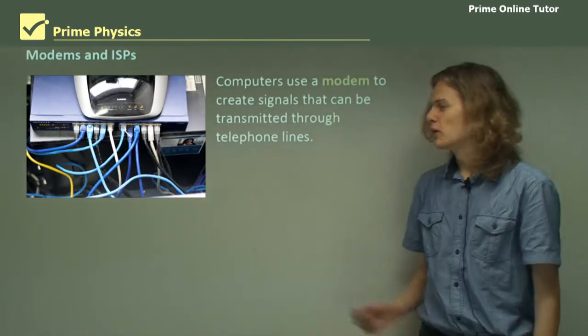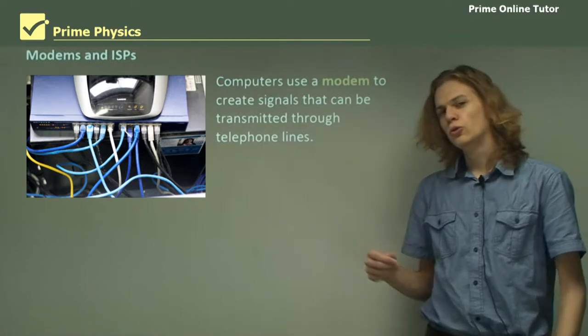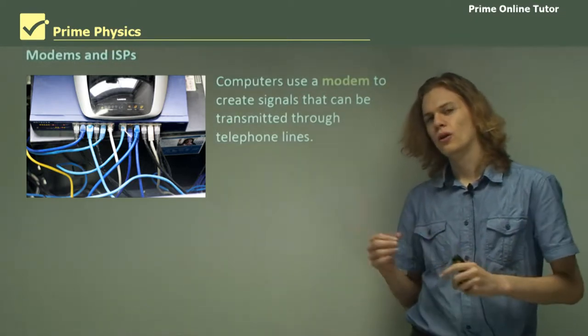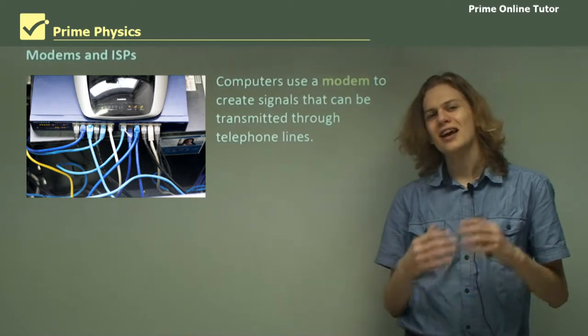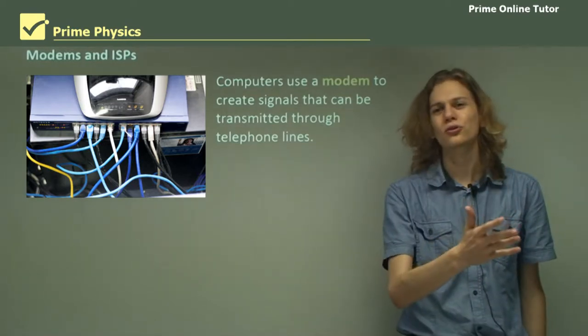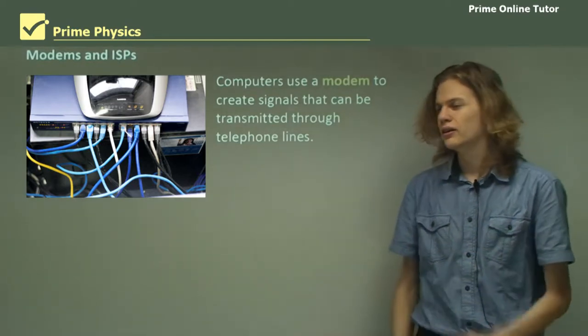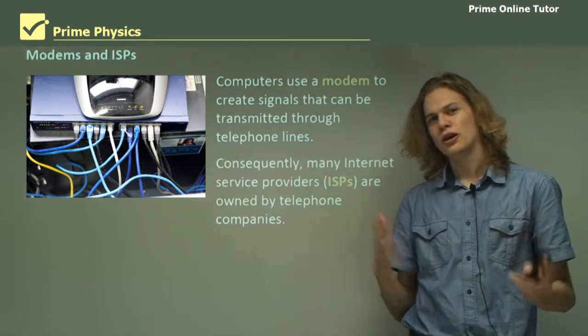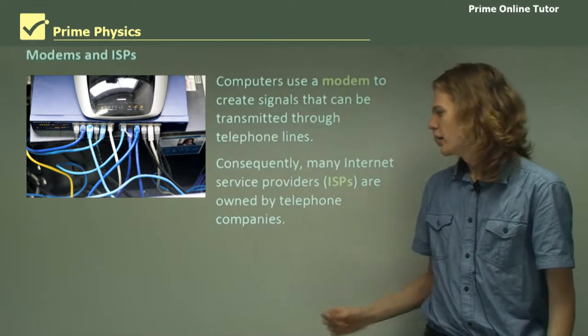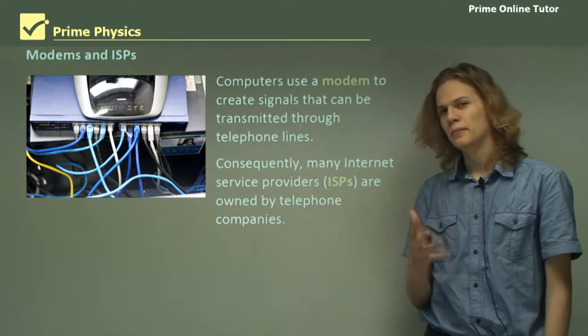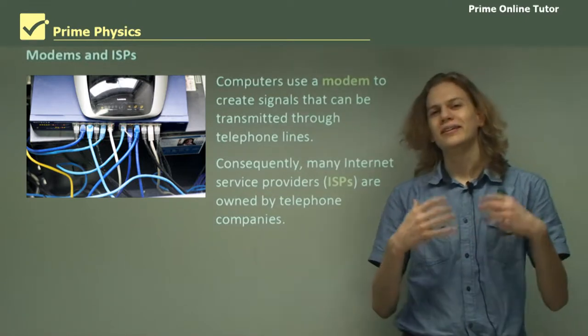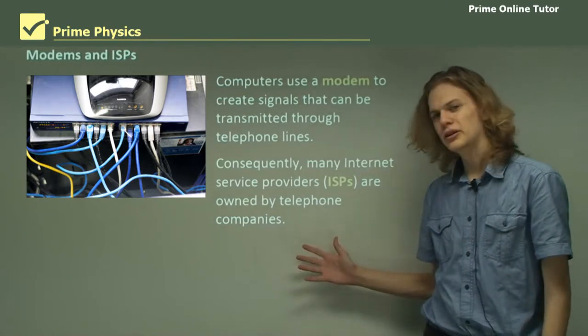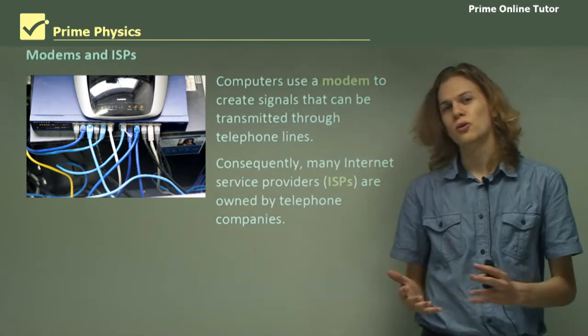Computers use a modem, which might look something like this, in order to turn the digital signals of the computer information into analog signals, which can be sent through phone lines. Consequently, because phone lines are controlled by telephone companies like Telstra, a lot of the internet plans that you can get are also associated with big phone companies, like Telstra's Big Pond, for example.